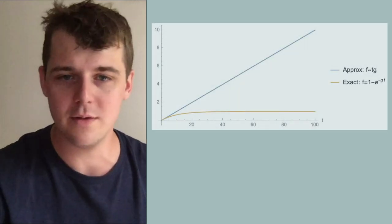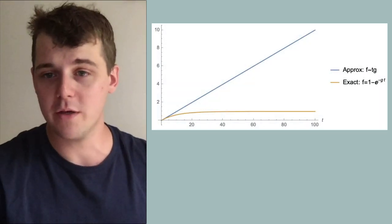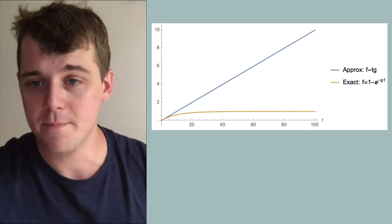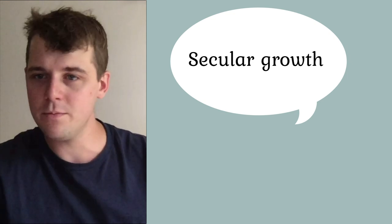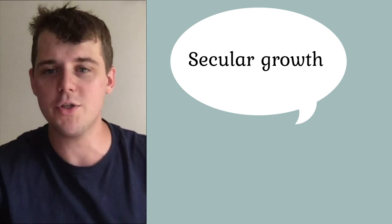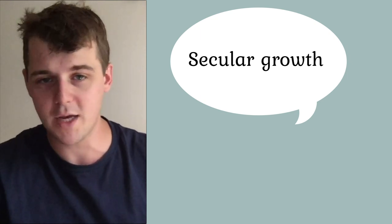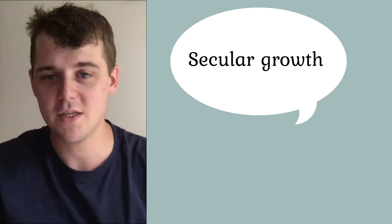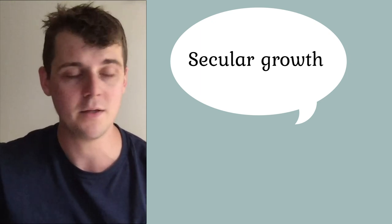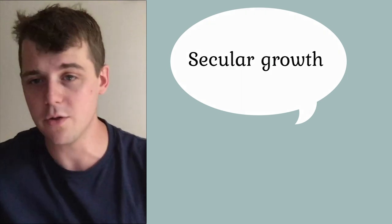Here's a more dramatic demonstration of this breakdown when looking at times of order t ~ 100. This problem is generically called secular growth. Historically, it comes from the Latin word 'saeculum,' meaning century, which underlines that this is an issue with perturbation theory occurring on very long timescales. This is a purely mathematical problem — not yet connected to physics — but very useful whenever you're solving a differential equation in some small parameter. There are great lectures on this topic by Steven Strogatz available on YouTube, linked in the description below.